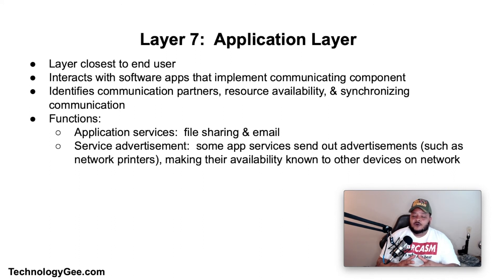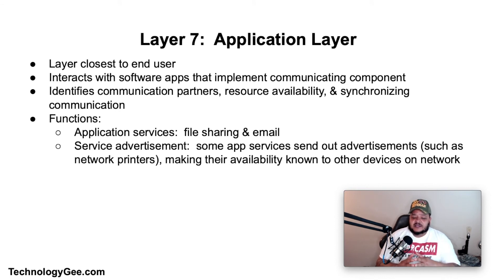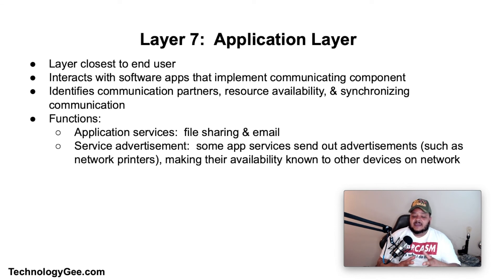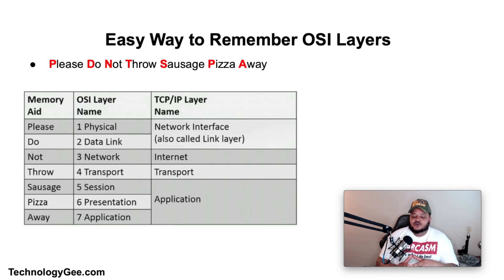An important distinction in the application layer is between the application entity and the application itself. For example, a reservation website might have two application entities: one using HTTP to communicate with its users, and one using a remote database protocol to record reservations — neither of these protocols handle the reservations logic, which lives in the application itself. Functions of the application layer include application services such as file sharing and email, and service advertisements where application services periodically send out advertisements — such as network printers making their availability known to other devices on the network.